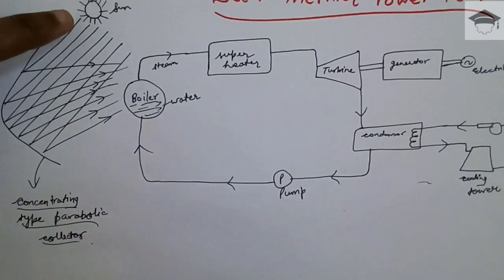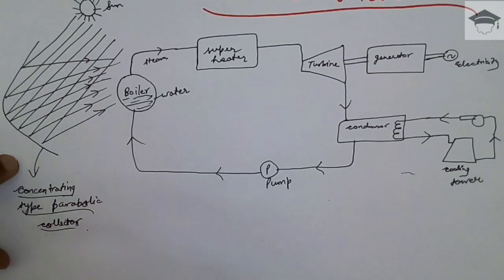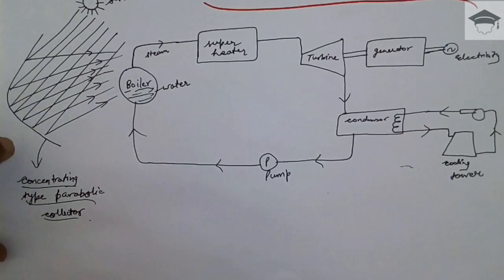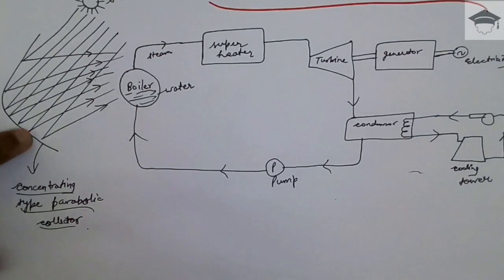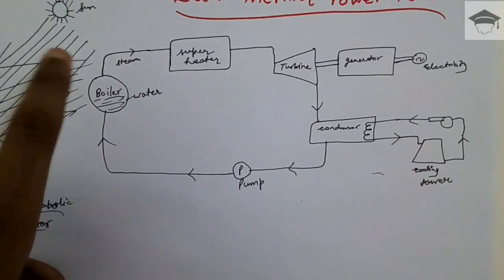Now this is the sun. The sun rays falling from the sun are made to fall on the concentrating type parabolic collector. This concentrating type parabolic collector directs the sun rays at its focus, and at the focus a boiler is kept.